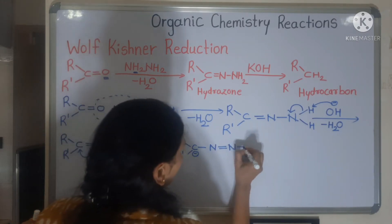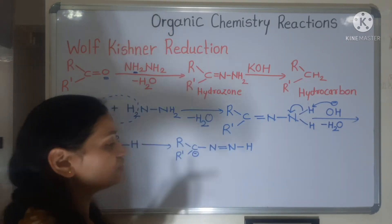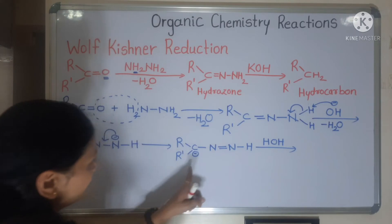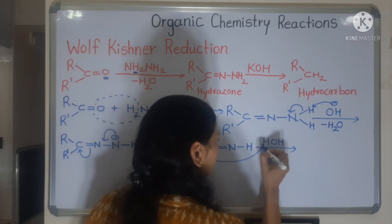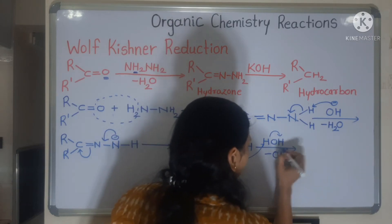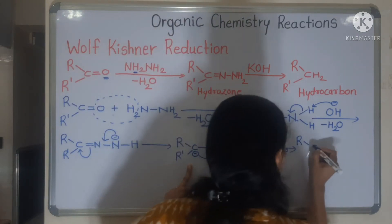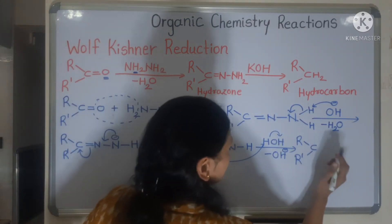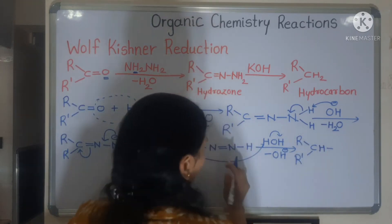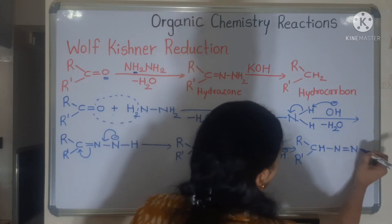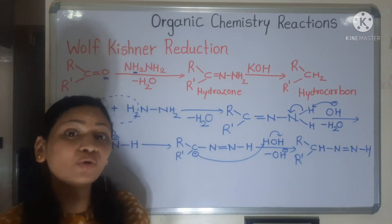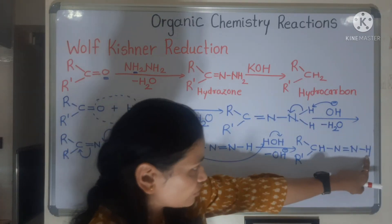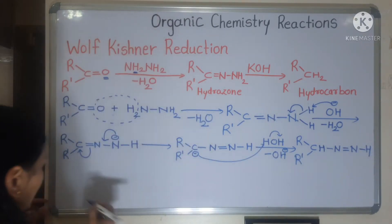The H2O that we eliminated earlier — we add it back. The carbanion attacks the hydrogen from water, and OH⁻ is released. So the species becomes R-CH(R')-N=NH. We now have one hydrogen on carbon; we need two hydrogens to form R-CH2-R', so we repeat the same step again with alkali.